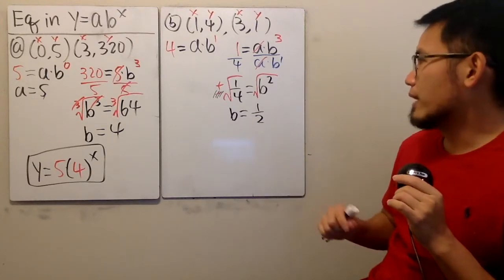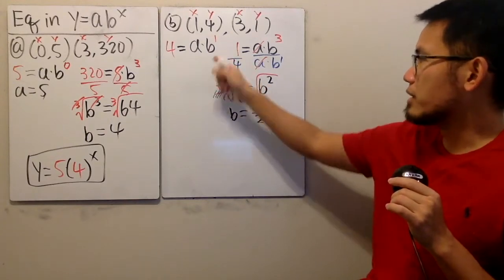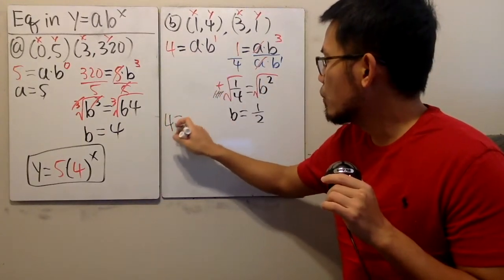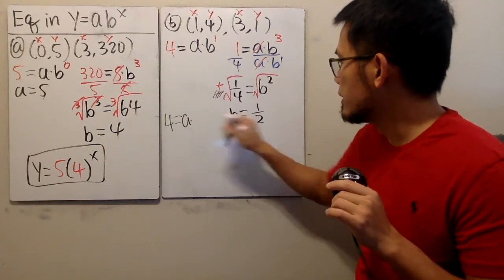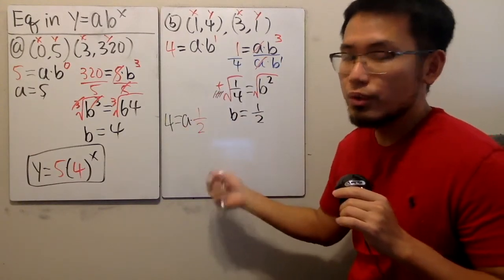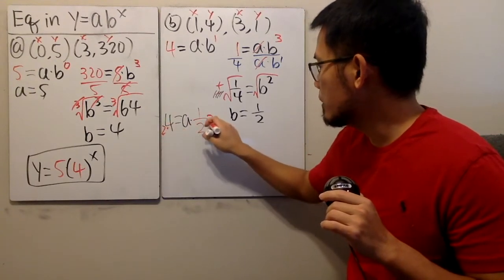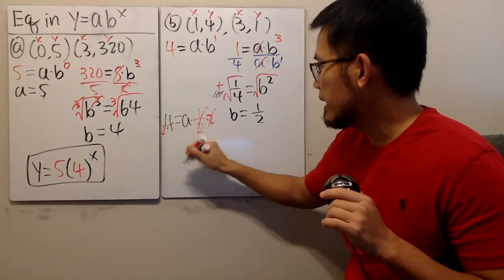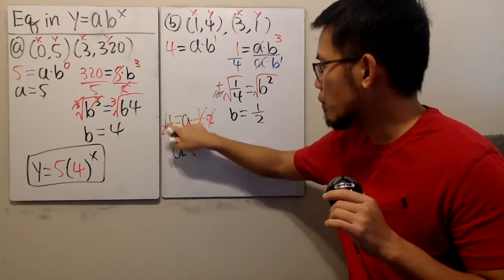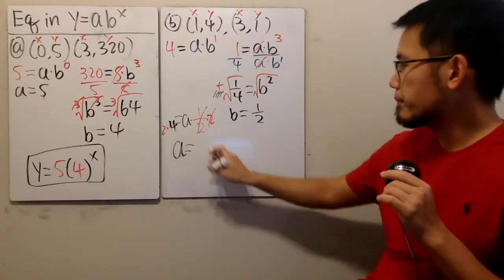We still have to find out what a is. Going back to the first equation: 4 equals a times b, which is 1 half. We multiply both sides by 2 so they cancel, and then a equals 2 times 4, which is 8.